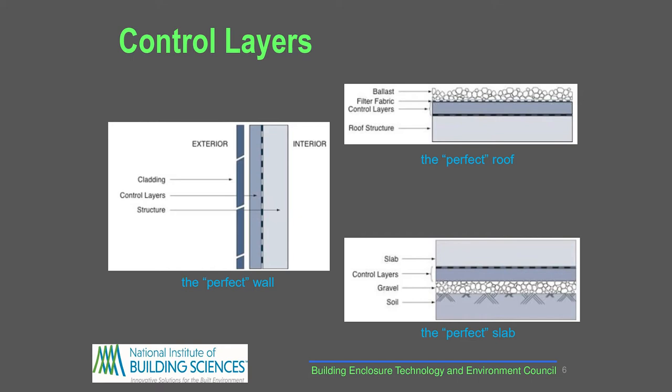Control layers are those things that provide environmental separation between two spaces that are conditioned differently. They provide rain control, air leakage control, vapor diffusion control, and heat transport control. In concept, we want to keep all moisture-sensitive materials inboard of those control layers.